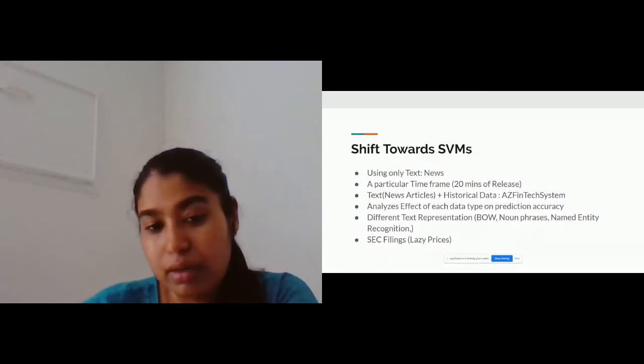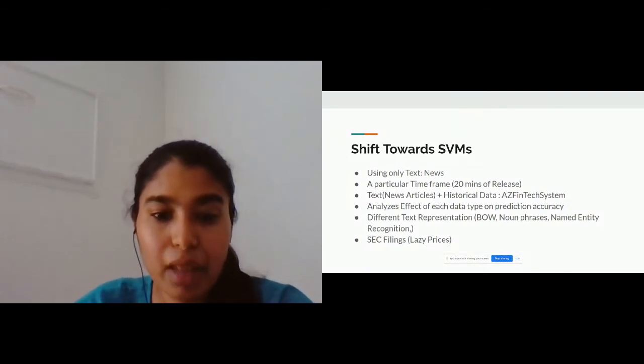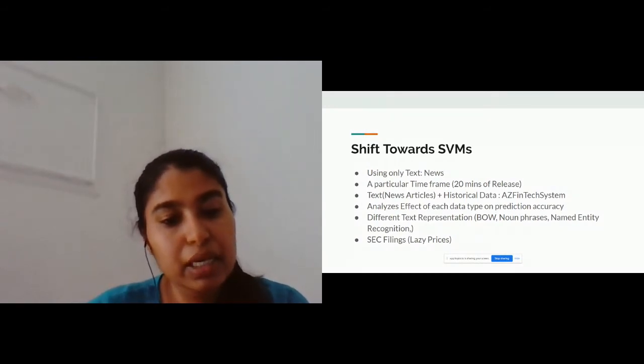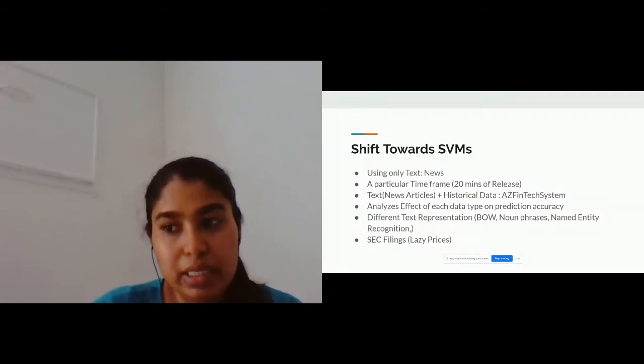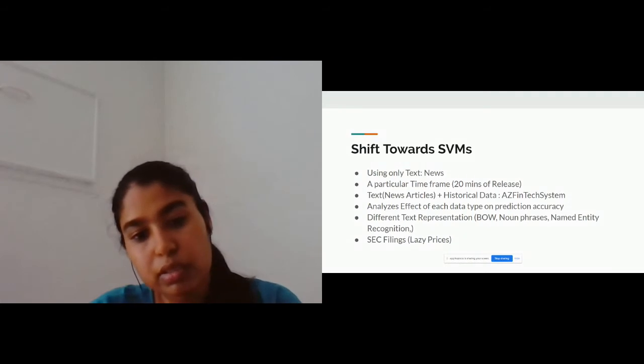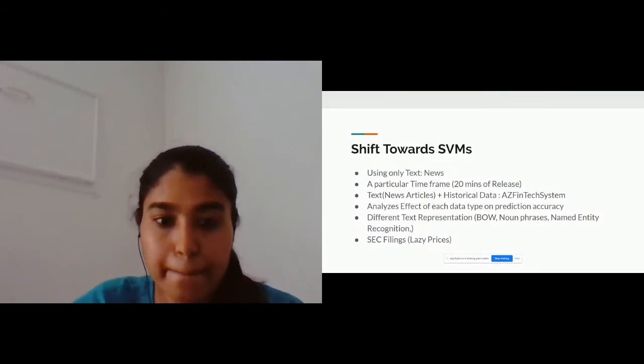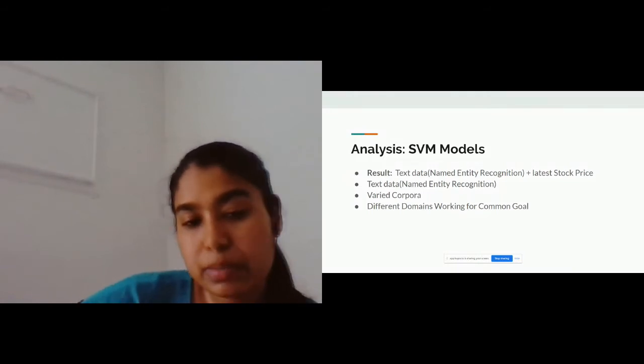This model also debased the Efficient Market Hypothesis, which said that it is not possible to predict in a particular time frame because it quickly adapts. Another interesting model was the AZFinTech system. They made different models with different combinations of data to analyze the importance of historical data and news with different text representation schemes. For example, they made various models in which the input was just text, another model in which input was just historical data, another model in which the input was both historical and regressed text and stock data, and many more.